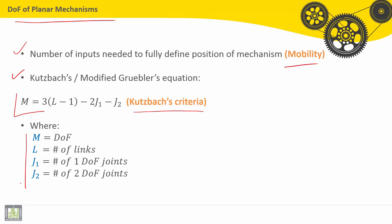Where M is the degree of freedom, L is the number of links, J1 is the number of 1 degree of freedom joints, and J2 is the number of 2 degree of freedom joints.